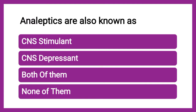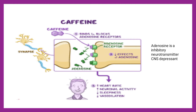Question 1: Analeptics are also known as — whether CNS stimulants, CNS depressants, both, or none. The correct answer is CNS stimulants. Analeptics are drugs which stimulate the central nervous system. A famous example is caffeine, which is a CNS stimulant.